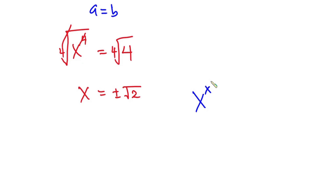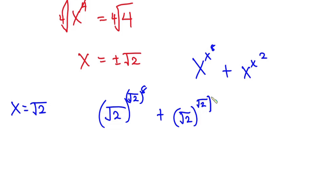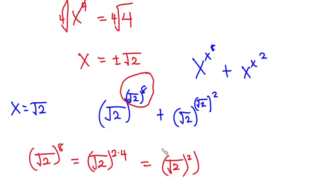From the problem we have to find x to the power x to the power 8 plus x to the power x to the power 2. If x equals square root of 2, this expression becomes square root of 2 to the power square root of 2 to the power 8, plus square root of 2 to the power 2 to the power 2. Let's focus on the exponent: square root of 2 to the power 8 is the same as square root of 2 to the power 2 times 4, which we can rewrite so that the square cancels the square root, giving 2 to the power 4, which equals 16.